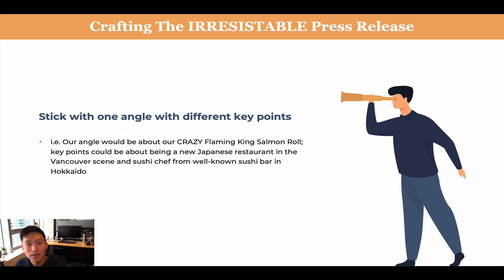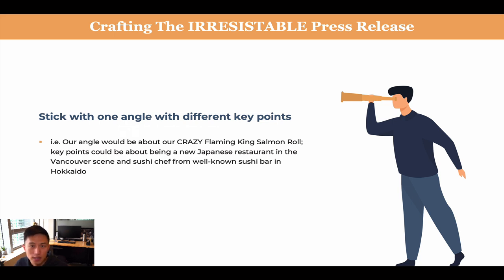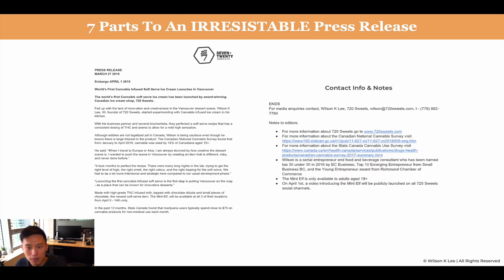That allows our journalists to pick and choose whichever point they feel is relevant, instead of us having six different angles or six different talking points, which would confuse our journalists. So definitely just stick to one, and then support it with all the different supplementary key points that we can talk about.